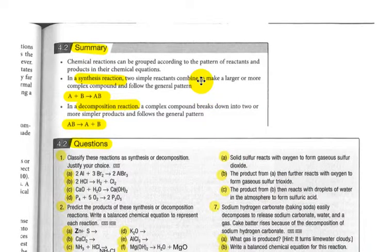In summary, we looked at two types of reactions in this section. Synthesis reaction, two elements or two simple compounds combined to make one larger compound. And decomposition reaction, one compound breaking down into two elements or a larger reactant breaking down into two or more simpler products.